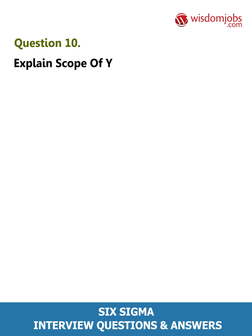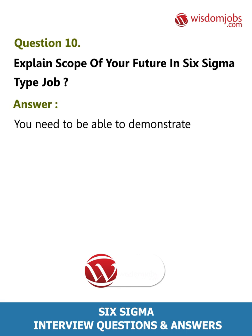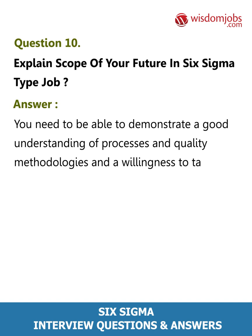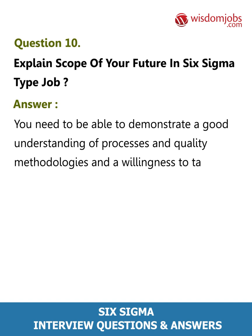Question 10: Explain the scope of your future in a Six Sigma type job. Answer: You need to be able to demonstrate a good understanding of processes and quality methodologies, and a willingness to take initiative and lead change. Another crucial skill is the ability to link methodologies, make recommendations on processes, and select a specific strategy for execution.